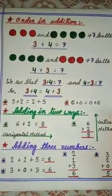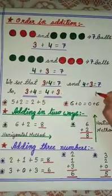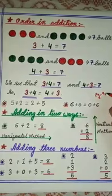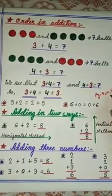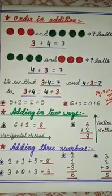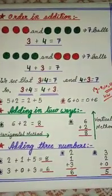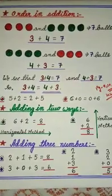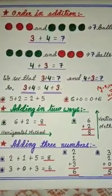Okay children, in your book you have page numbers 9, 10 and 11. You will do this page numbers as your homework. On these page numbers you have order in addition. Some sums are there. Adding in two ways. Addition of three numbers.